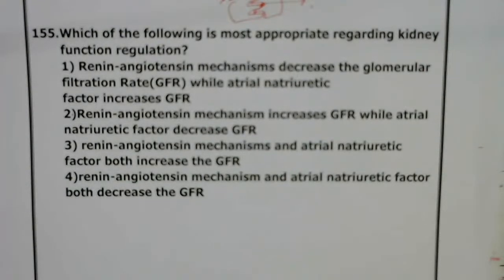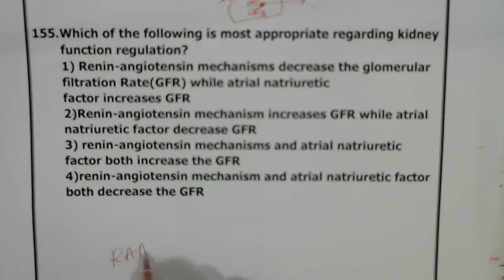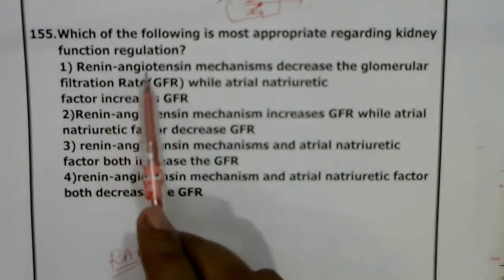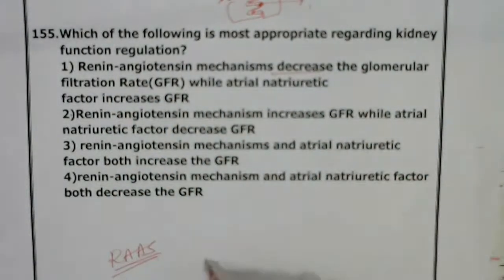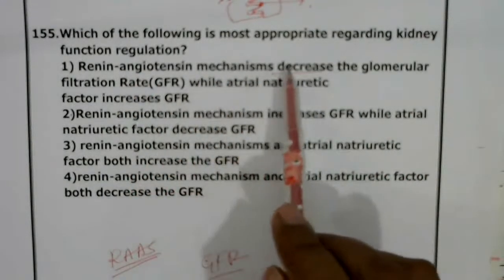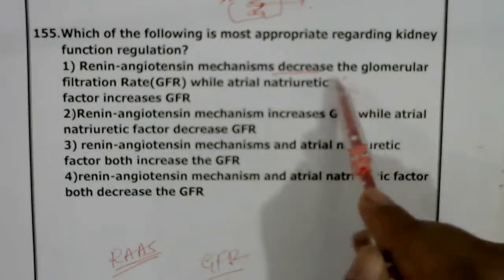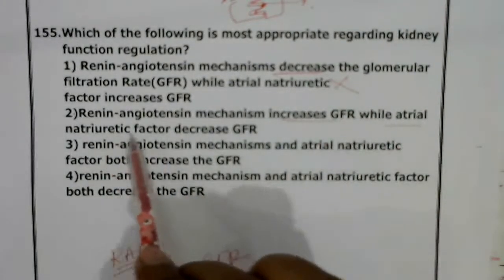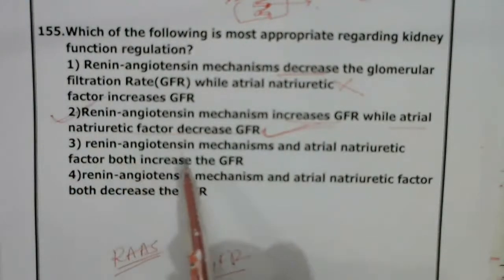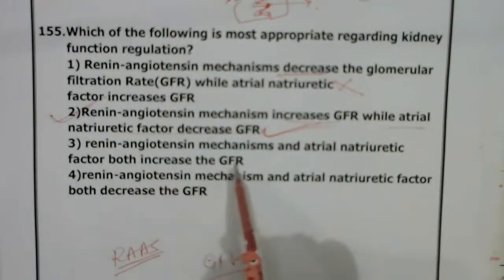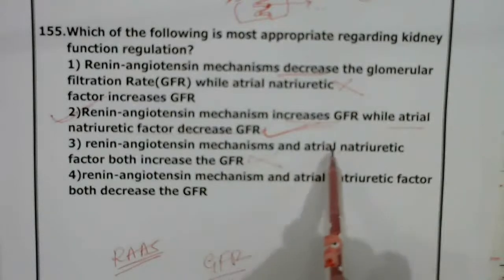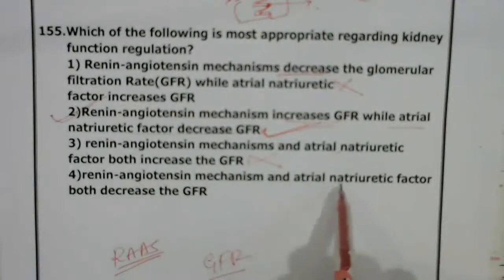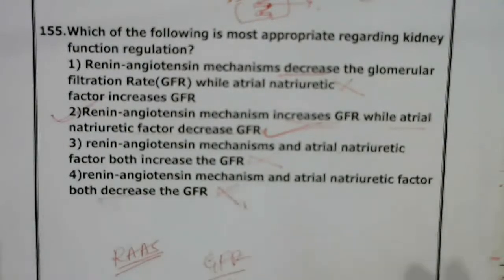Question 155: Which is most appropriate regarding kidney function regulation? The renin-angiotensin-aldosterone system (RAS) — GFR is 125 ml per minute. 'Renin-angiotensin mechanism decreases GFR' — actually it increases, so this is incorrect. The correct answer: renin-angiotensin mechanism increases GFR, while ANF (atrial natriuretic factor) decreases GFR. They are antagonists in function — one increases and the other decreases. Correct answer is the second option.